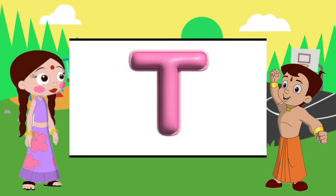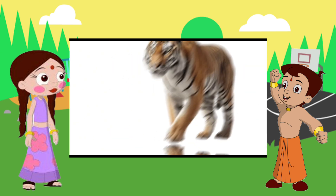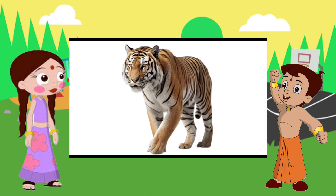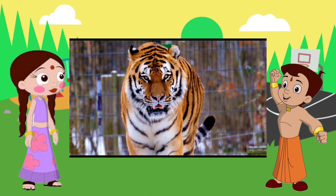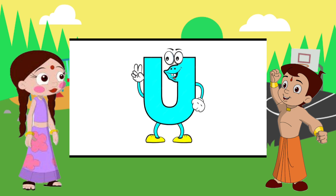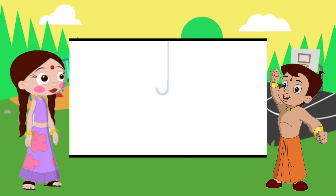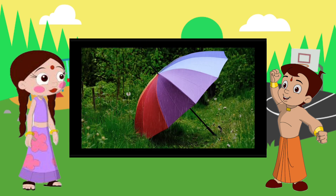T is for tiger. T-T-tiger, T-T-tiger. T-tiger. U is for umbrella. U-U-umbrella, U-U-umbrella. U is for umbrella.